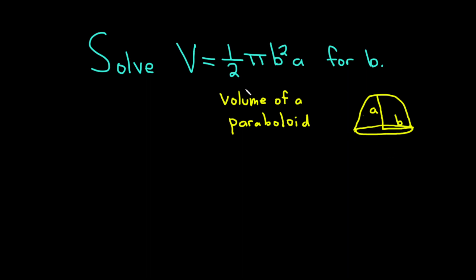Alright, so we have to find b. Let's go ahead and carefully work through it. Let's start by writing it down again. So we have V = 1/2 π b² a. And we're looking for b. Let's just do it in steps.